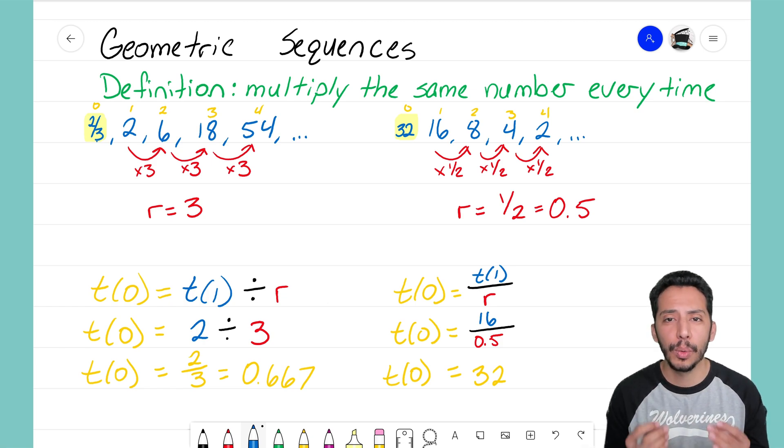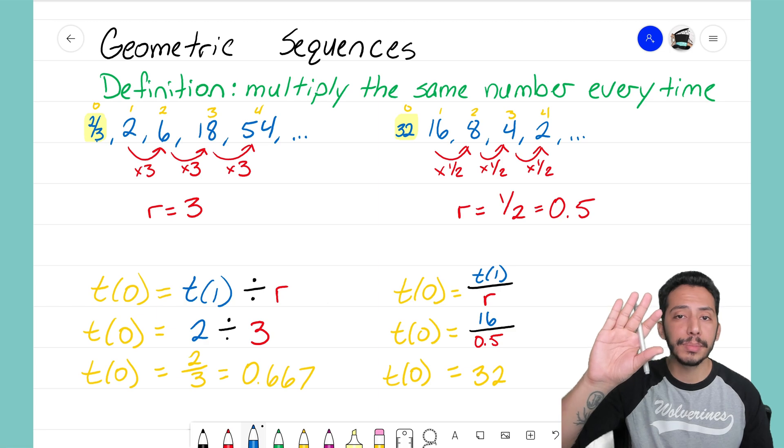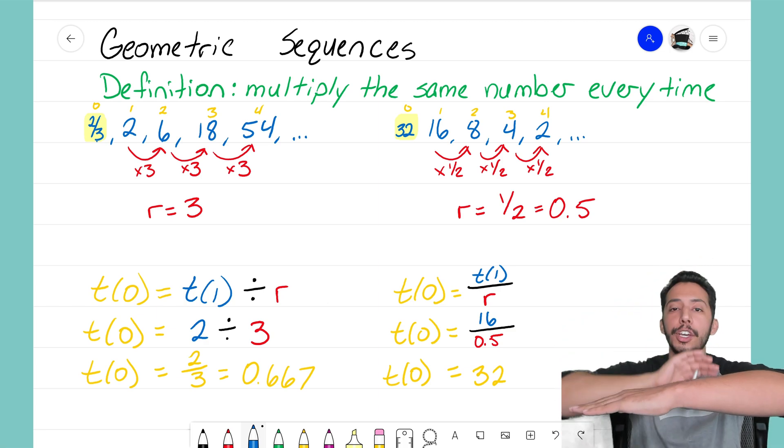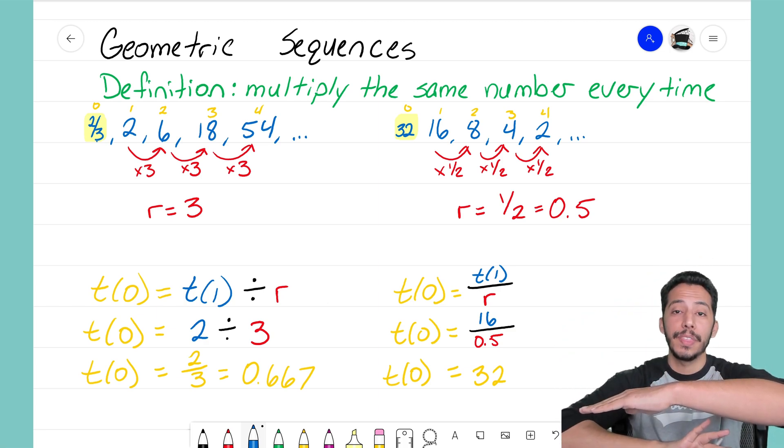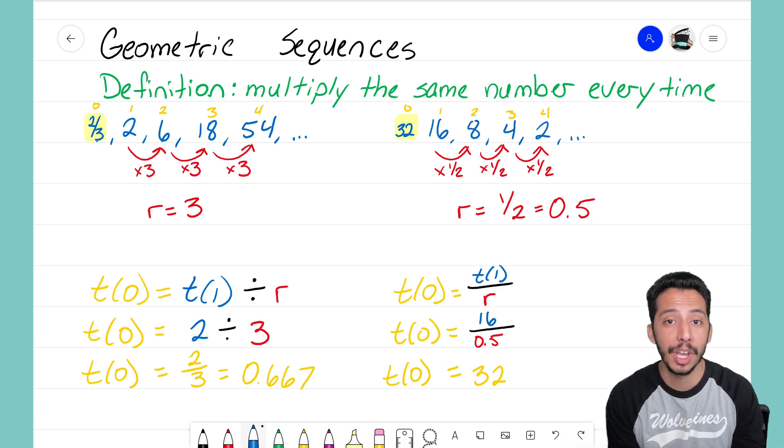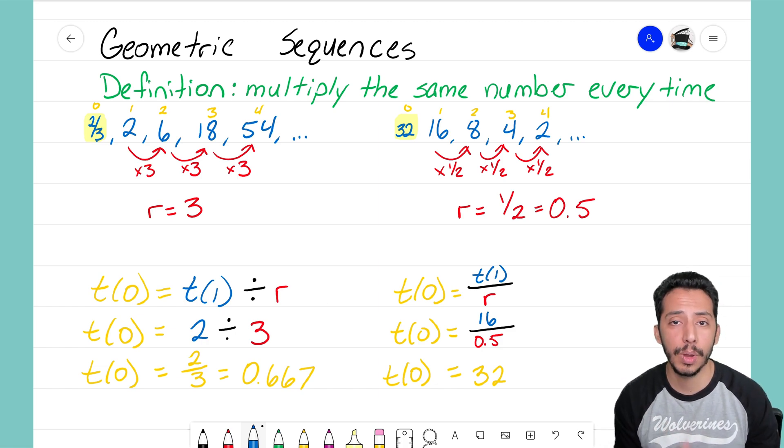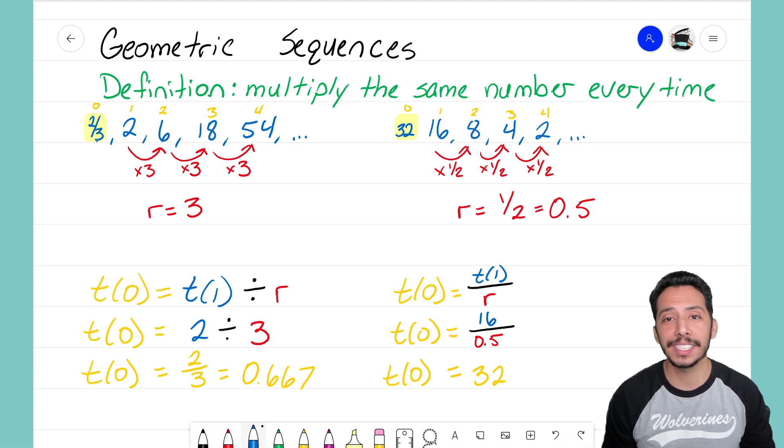That's how we find the zero term in a geometric sequence. It boils down to: get your first term, divide by your common ratio. That's why it's so important that we find the common ratio first - we can't find the zero term unless we know the common ratio. It's that math magician, and I'll see you on the next video.